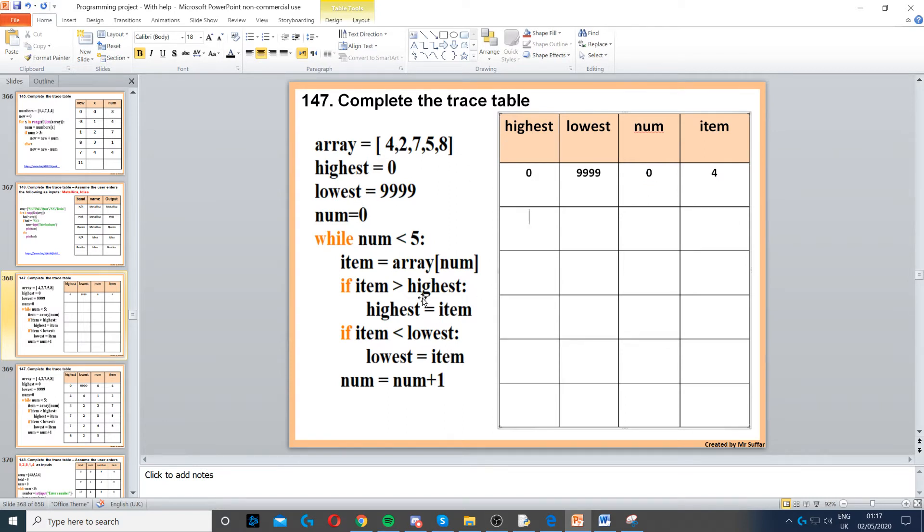Then highest, we go to if item is greater than highest. So is 4 greater than 0? Yes, so we set highest to 4, or to item, which is 4. Then if item is less than lowest, so yes, 4 is less than 9999, so we set that to 4 as well.